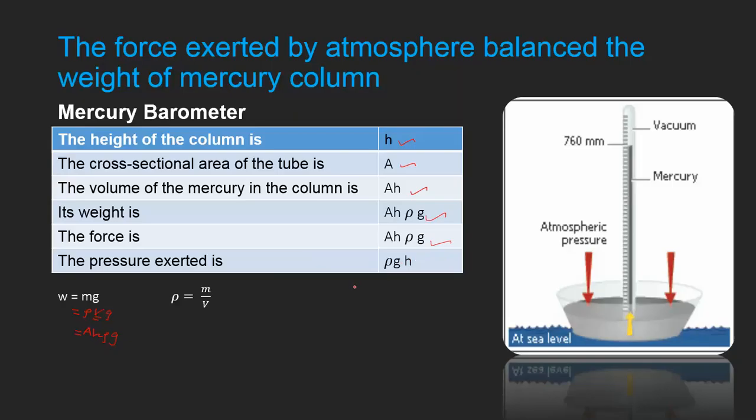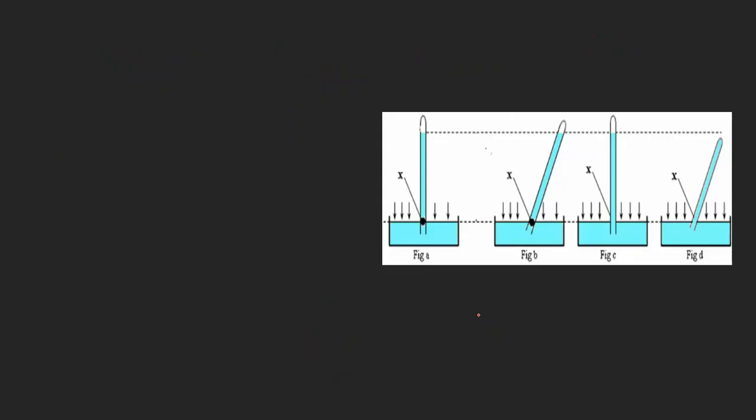The pressure P is equal to F over A. F is A times H times Rho times G, over A. The area is A, so P equals Rho times G times H. Rho will cancel with the area, giving us the pressure formula.